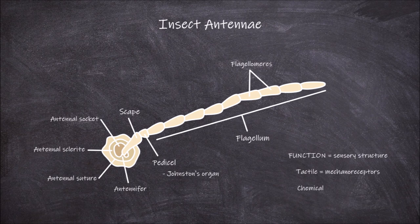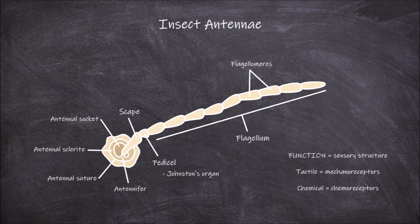Mechanoreceptors found on the antennae allow the insect to get information on the physical characteristics of the world around them. Chemoreceptors, also found on the antennae, allow the insect to detect chemical signals from the environment.